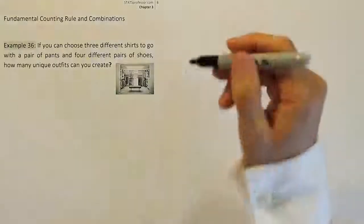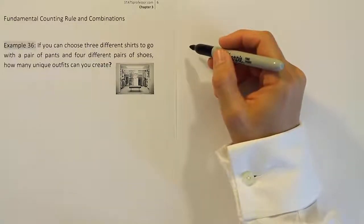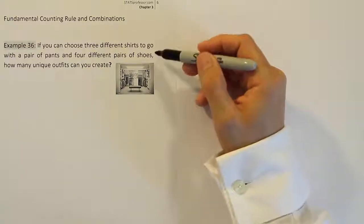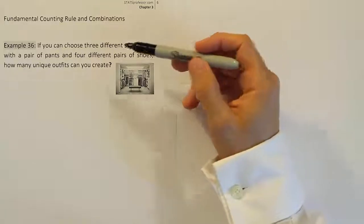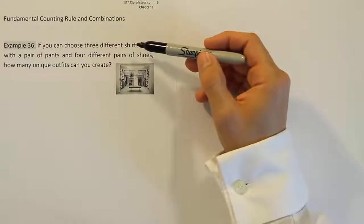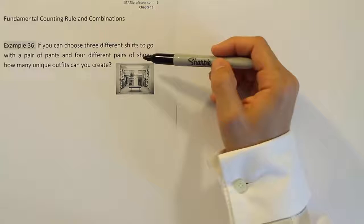Let's write it out for this particular example so it makes concrete sense. Here in this process, to get dressed in the morning, apparently the person has to choose between three different shirts, and then a pair of pants, and four different pairs of shoes.